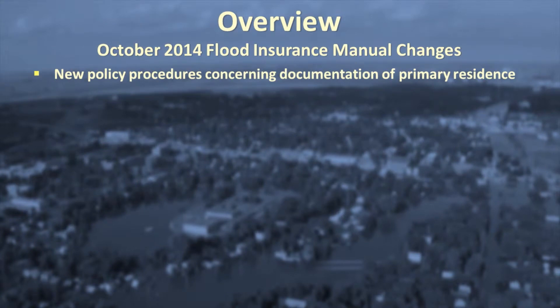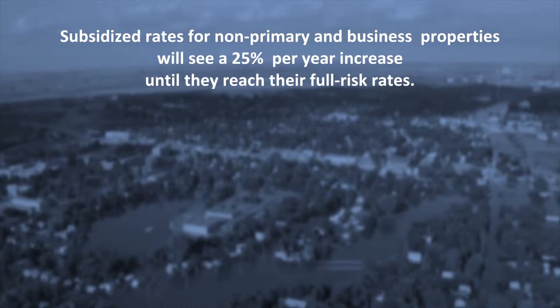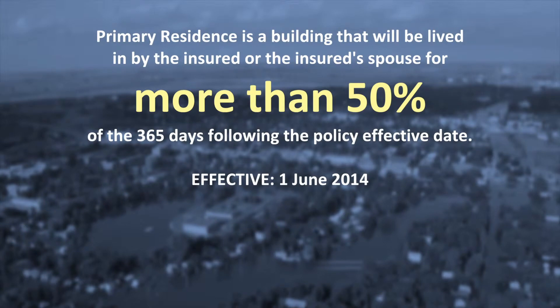Effective October 1st, new policy procedures in the General Rules section will address documentation for a primary residence. As a result of the Biggert-Waters Flood Insurance Legislation of 2012, subsidized rates for non-primary and business properties will see planned 25% per year increases until they reach their full risk rates. For rating purposes only, a primary residence is a building that will be lived in by the insured or the insured's spouse for more than 50% of the 365 days following the policy's effective date. This rule took effect June 1, 2014. Prior to that date, the threshold was stated as at least 80% of the 365 days following the policy effective date.